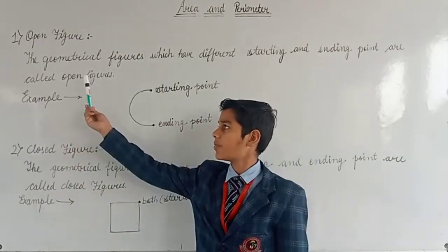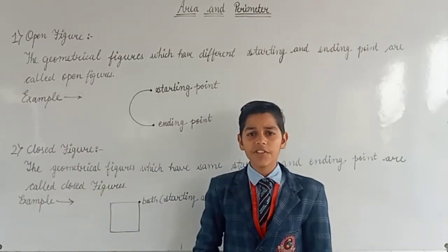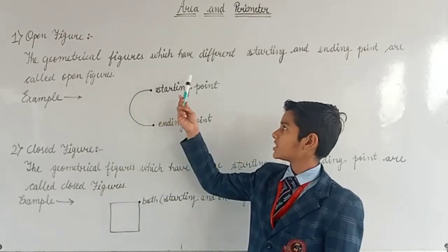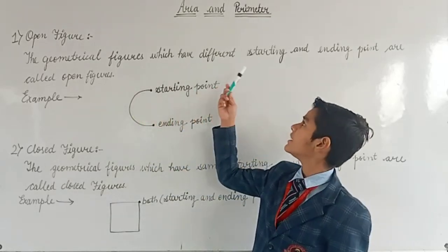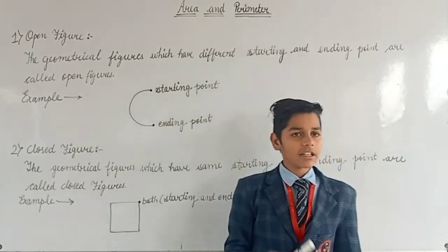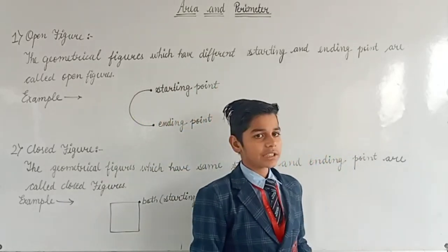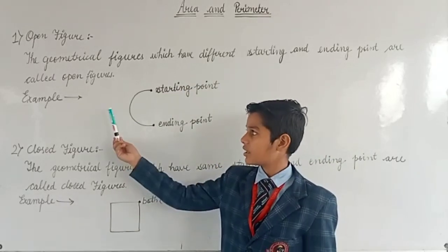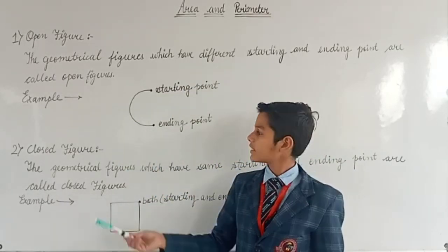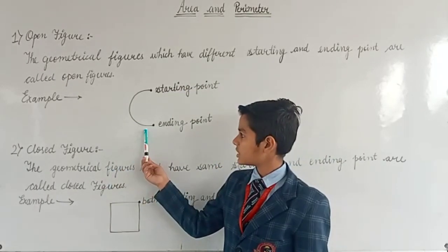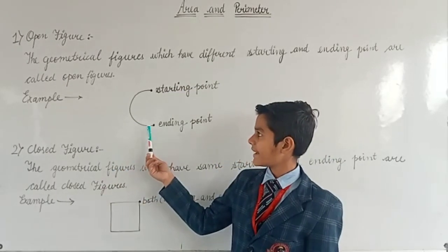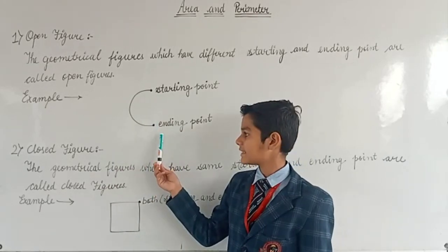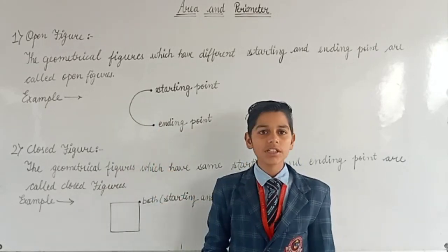So what is an open figure? The geometrical figures which have different starting and ending points are called open figures. For example, this is an open figure — this is its starting point and this is its ending point.